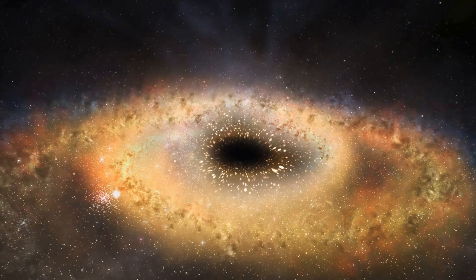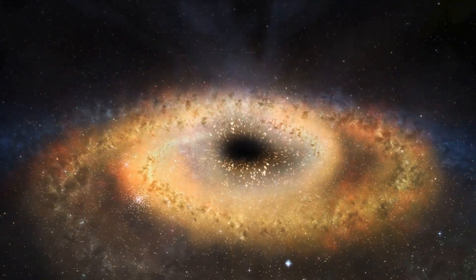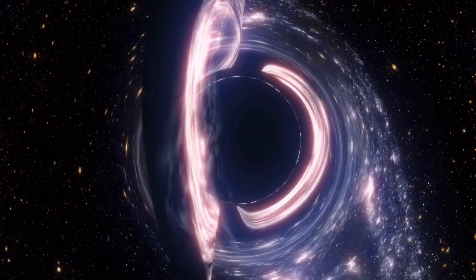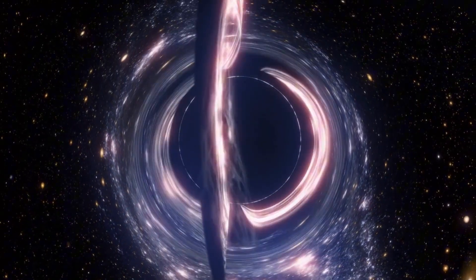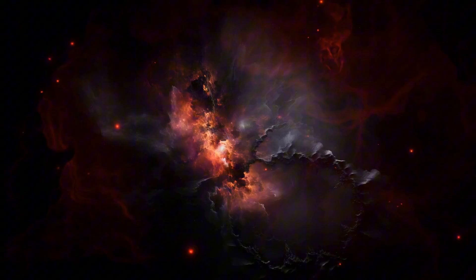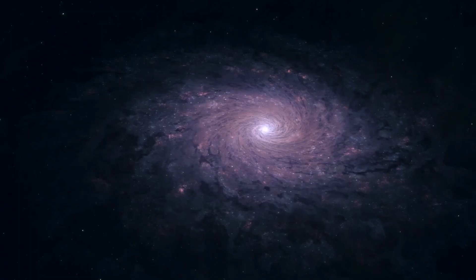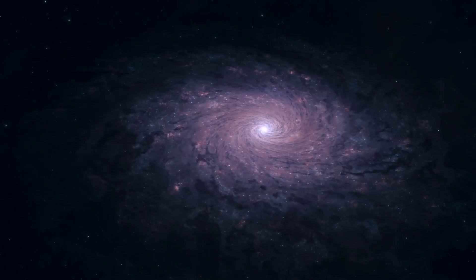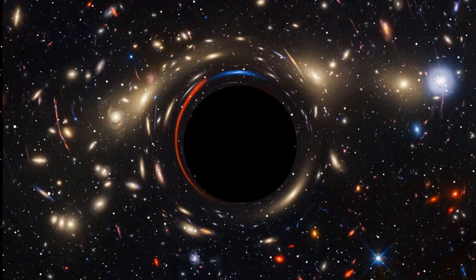Now how supermassive black holes form remains a mystery. Some theories suggest they grew over time from smaller black holes merging, while others think they form directly from collapsing gas clouds in the early universe. One thing is clear, though. They leave a massive imprint on their surroundings.